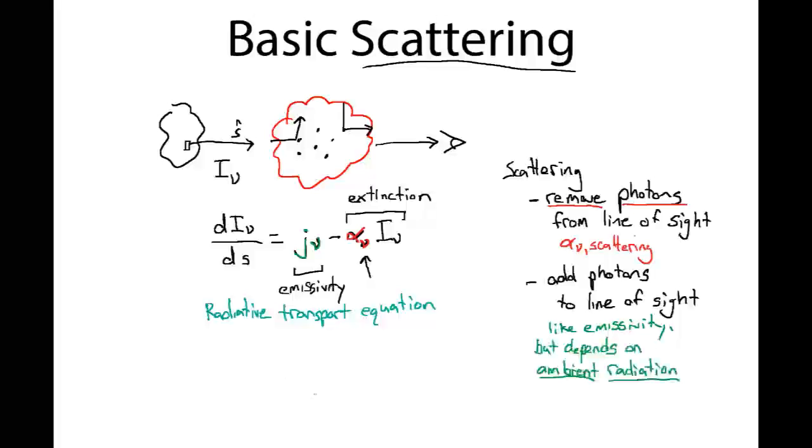And what do we mean by ambient radiation? We just mean that if we have a scatterer here, we can have light rays, these specific intensity, coming in from all sorts of different directions here, and all can potentially be scattered into our line of sight towards an observer by the scatterer. So we start to care about our intensity in any direction shining on our scatterer, and we care about the cross-section for scattering that light into the line of sight of our observer.